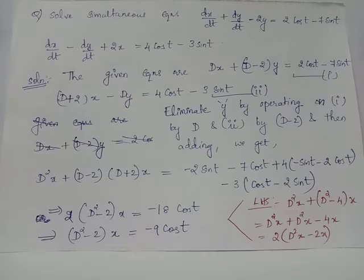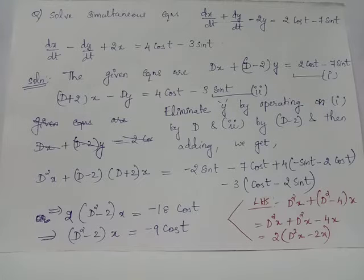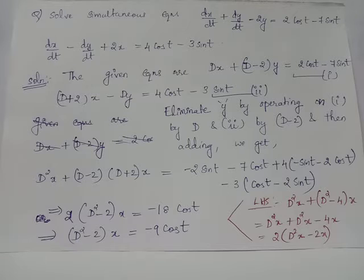Solve the simultaneous set of linear differential equations: dx/dt + dy/dt - 2y = 2cos(t) - 7sin(t). The second differential equation is dx/dt - dy/dt + 2x = 4cos(t) - 3sin(t).